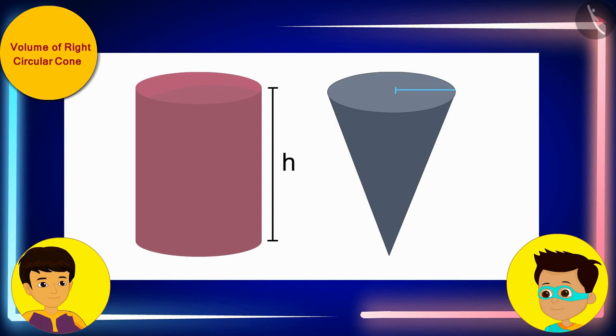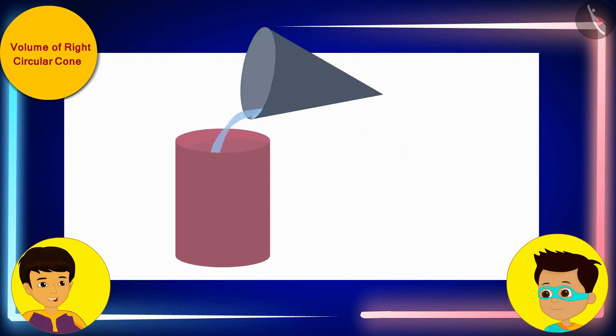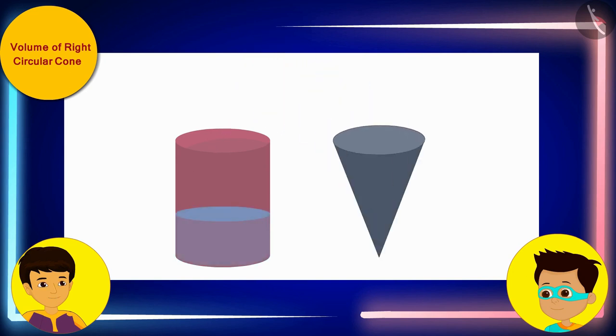Thomas, now we will first fill this right circular conical vessel completely with water up to the brim and pour this water into this cylindrical vessel. Look, Thomas! Some part of the cylindrical vessel has been filled with water.